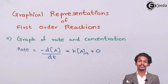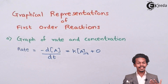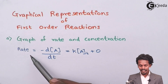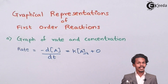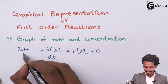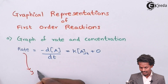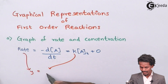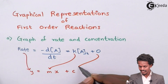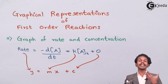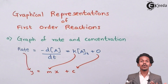The first graph is the graph of rate versus concentration. The formula can be written as: rate = −d[A]/dt = k[A_T] + 0. In this equation, rate acts like y, k acts like m (the slope), [A_T] acts like x, and 0 acts like the constant c. So it makes a straight line graph of the form y = mx + c.